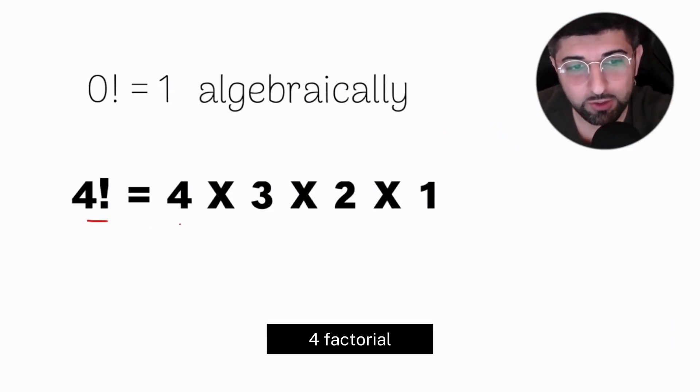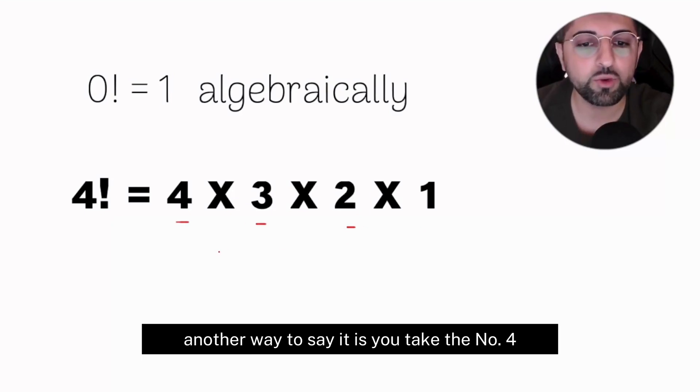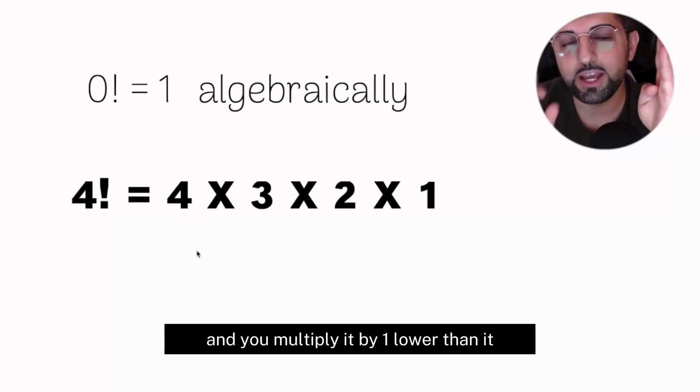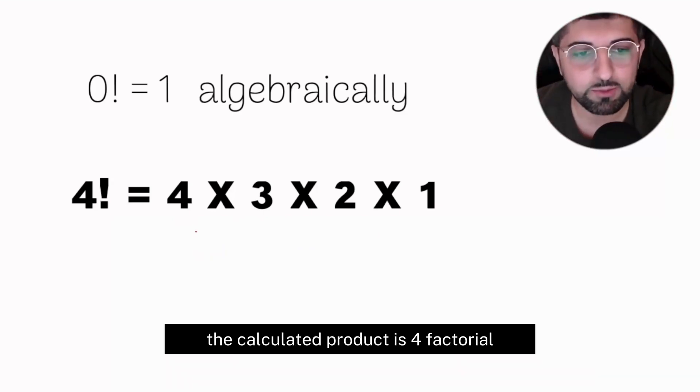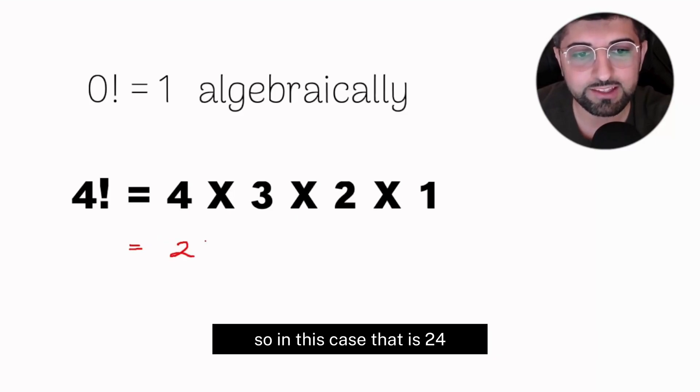Algebraically, four factorial, for example, is 4 × 3 × 2 × 1. Another way to say it is you take the number four and multiply it by one lower than it until you reach one. The calculated product is four factorial, so in this case, that is 24.